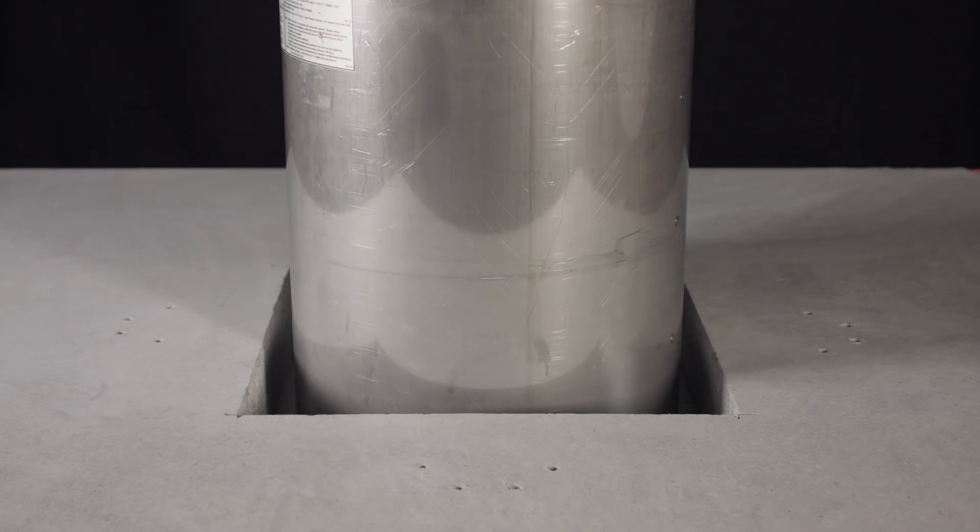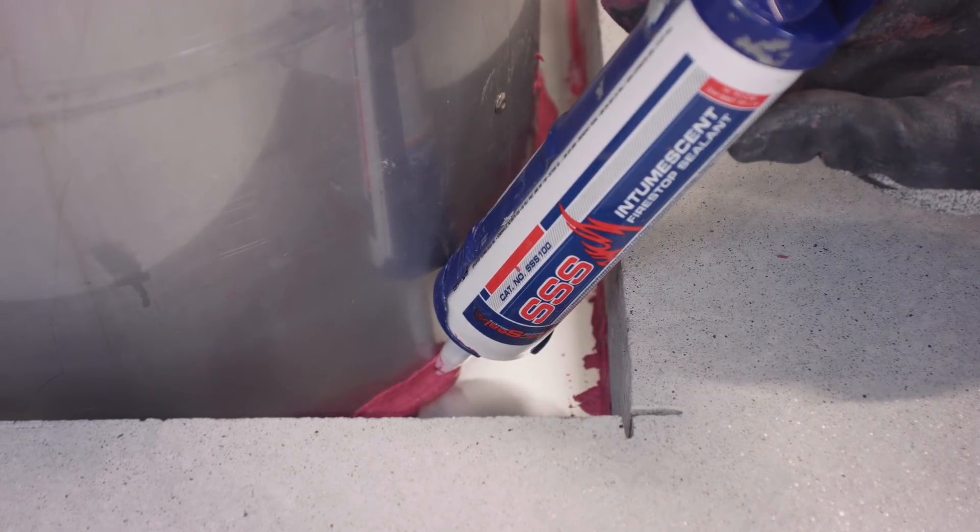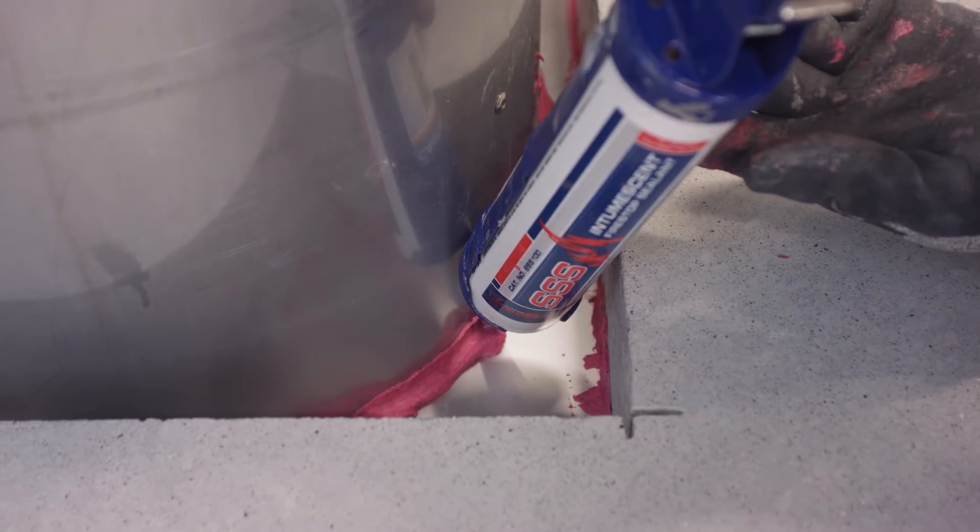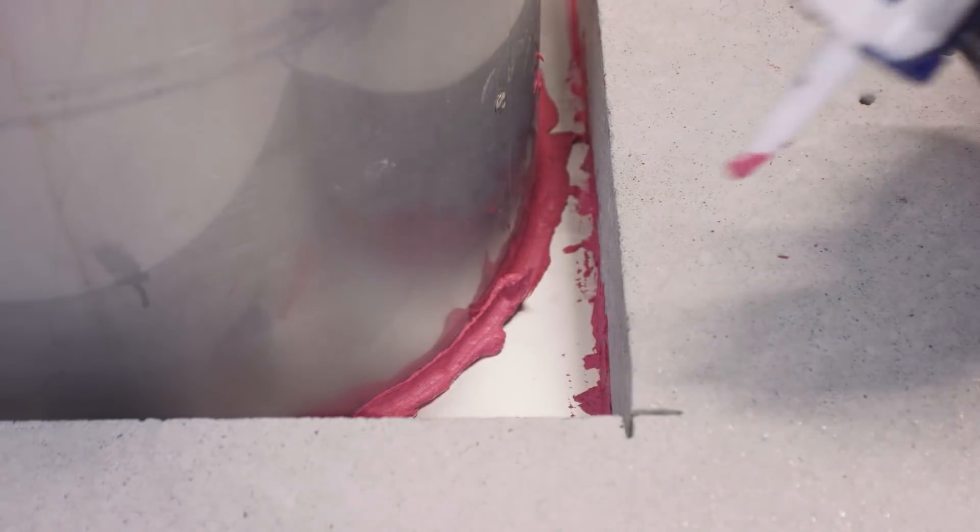After installing the fire plate, all joints must be sealed from the top with intumescent. Be sure to fill all the gaps around the duct and edges.